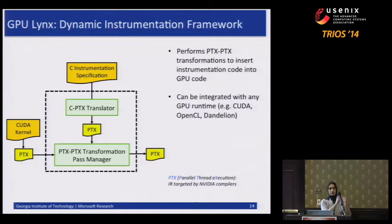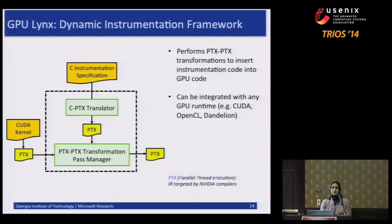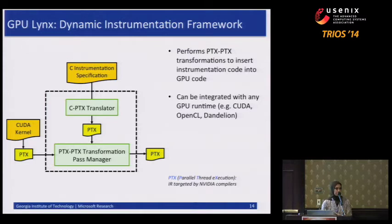GPU Links takes each of those CUDA/GPU kernels along with an instrumentation specification written in C. In our case, we're measuring global memory accesses and whether they're aligned in memory. GPU Links extracts the intermediate language — called PTX for NVIDIA — inserts the instrumentation code at that layer, and then executes it, generating a new instrumented PTX which can be executed on the GPU backend.